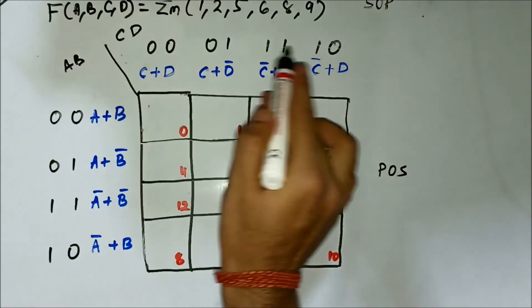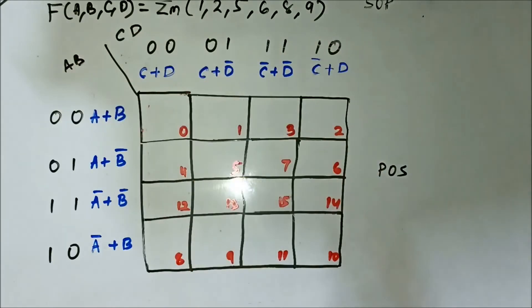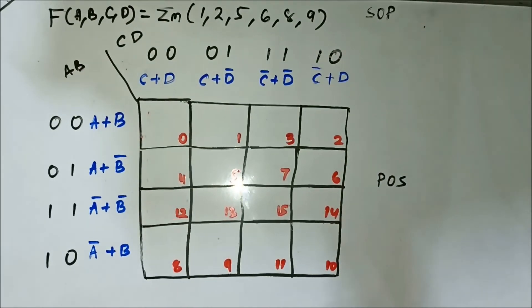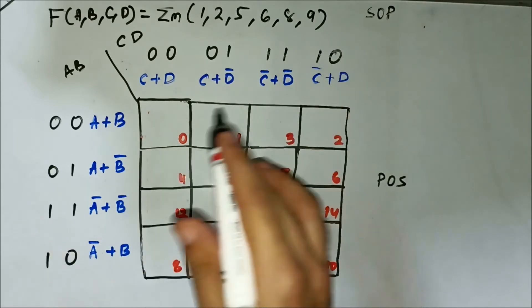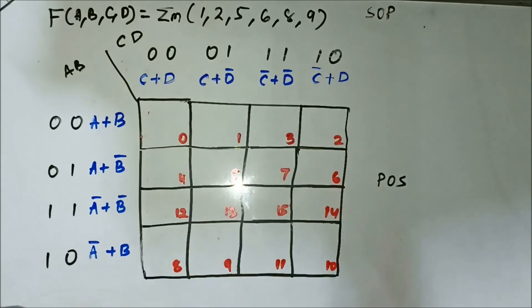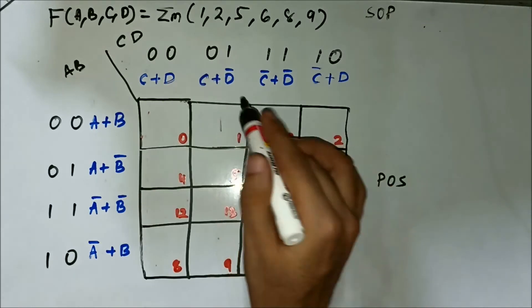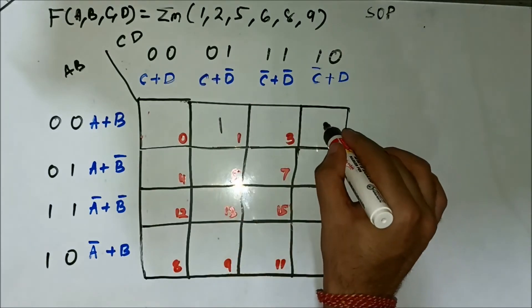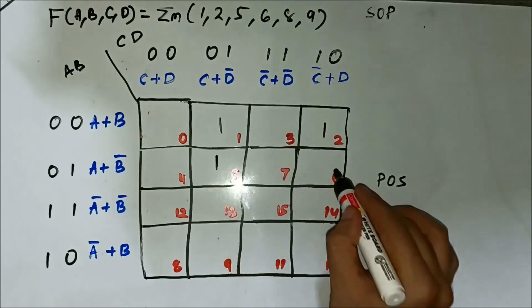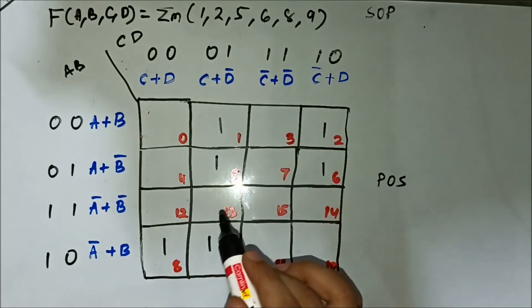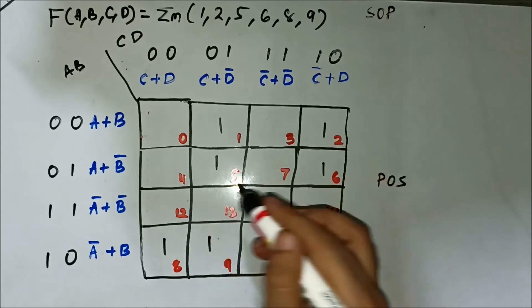We have the SOP expression given in terms of the minterm values. Values are 1, 2, 5, 6, 8, 9. We have the format of the four variable POS K-map with us. So we'll first plot it. 1, 2, 5, 6, 8, 9.